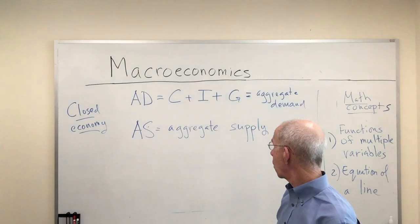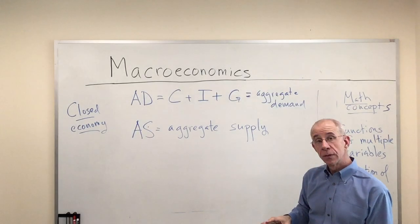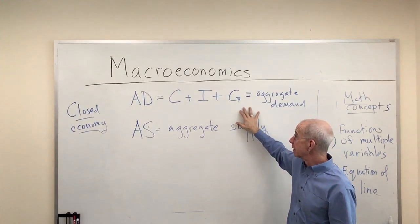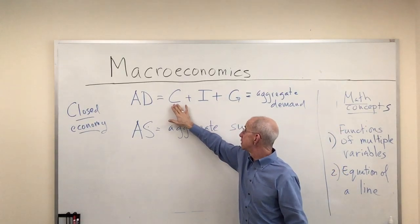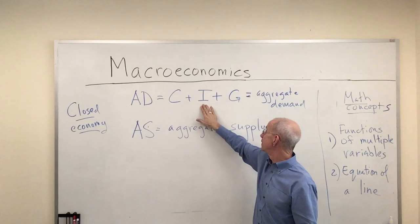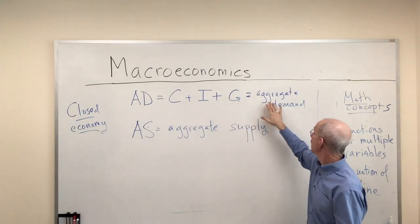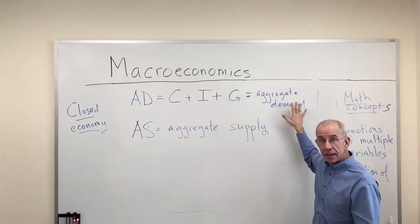We're going to use the closed economy version of aggregate demand, where we had C, consumption, plus investment, plus government spending on goods and services is how we break up aggregate demand.